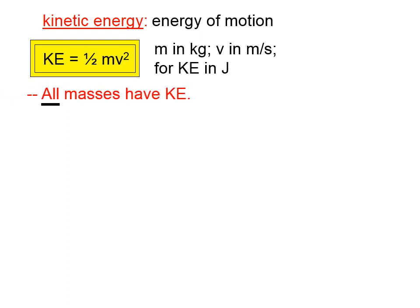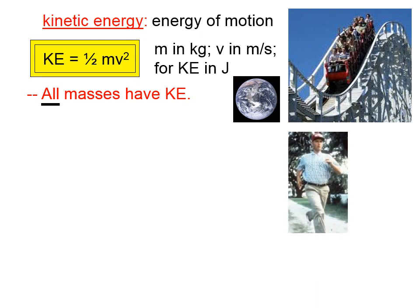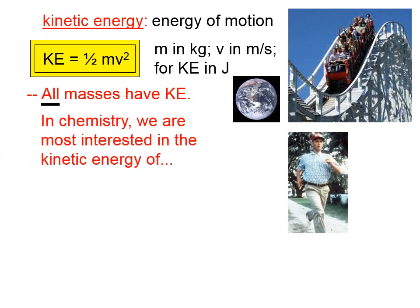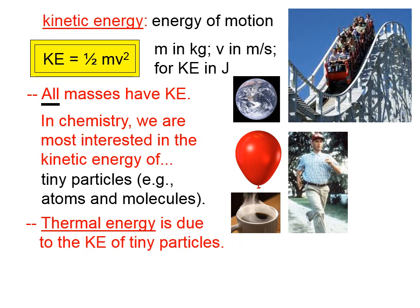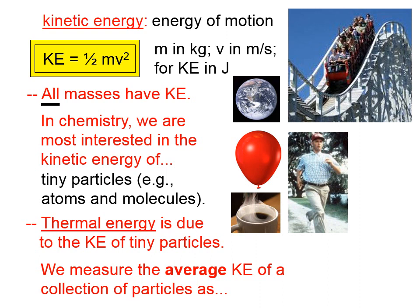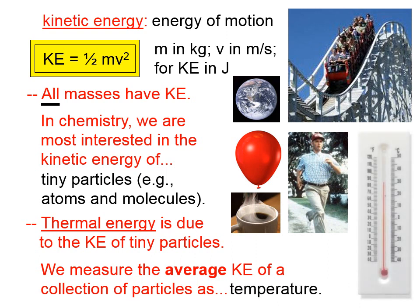All masses have kinetic energy, because all masses are moving. In physics, you're usually interested in macroscopic objects — the Earth, a human, a roller coaster. But in chemistry, we're more interested in the kinetic energy of tiny particles, like atoms and molecules, gas particles, or the kinetic energy that particles have in liquid form — this hot cup of coffee, for example. Thermal energy is due to the kinetic energy of tiny particles, and we measure the average kinetic energy of a collection of particles as the temperature — a measure of the average motion of a collection of particles.